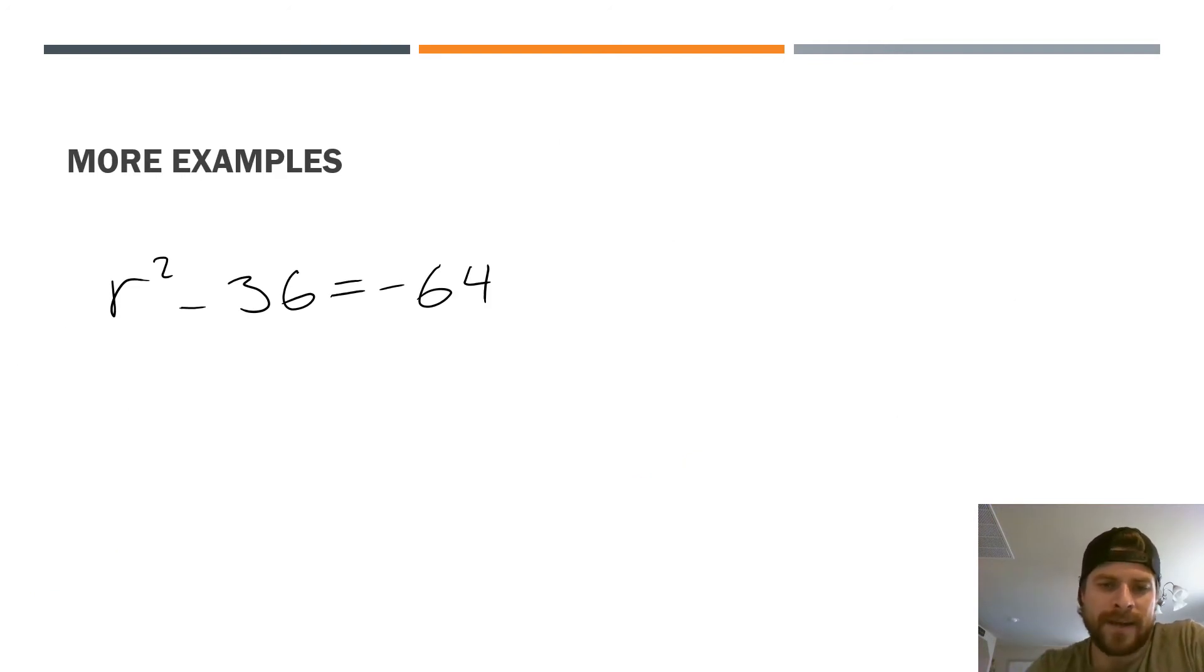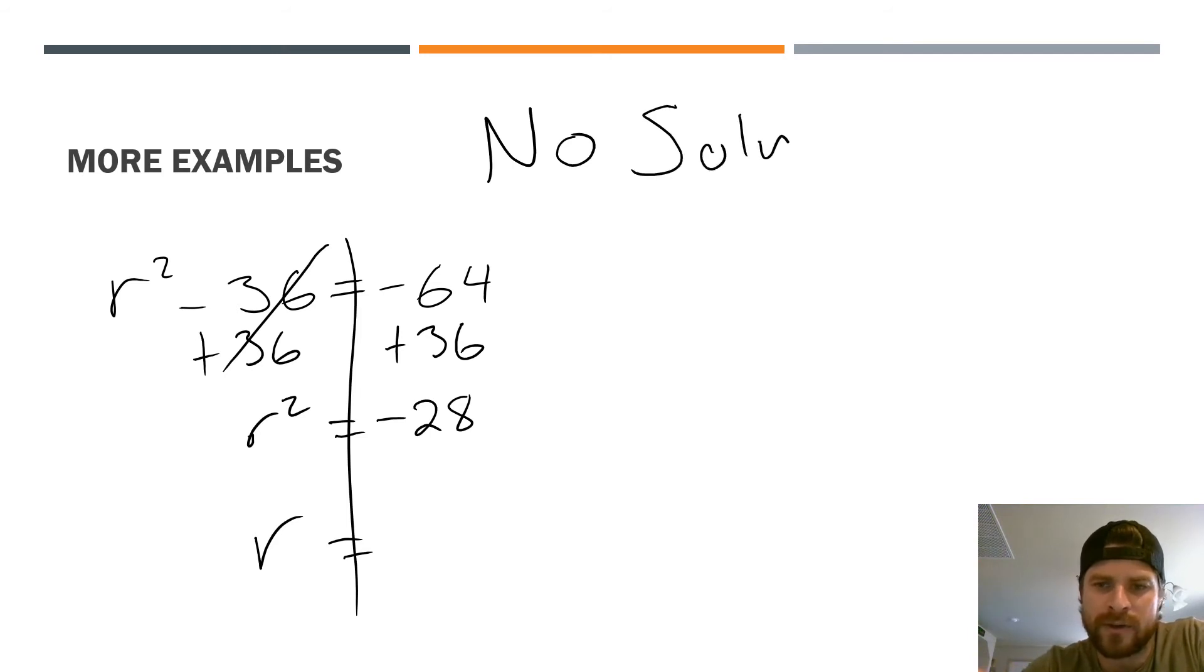Now, this problem is different in the sense that when I go to isolate r, when I go to get r by itself, the first step is I'm going to add 36, cancels, add 36, and I get a negative 28 here on the right side. So I have r² = -28. This is not a possible solution. Right now you can stop and you can say the answer to this is no solution.